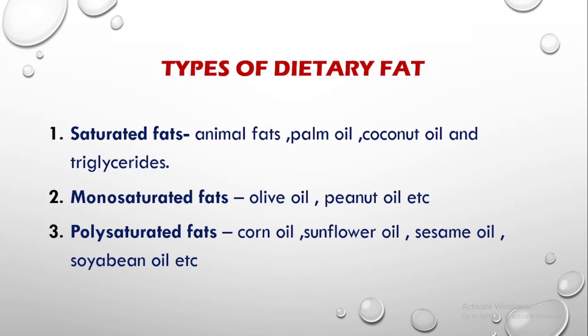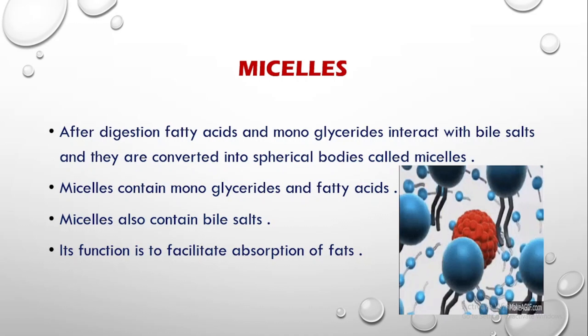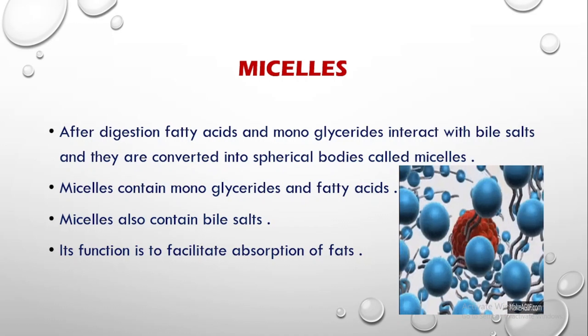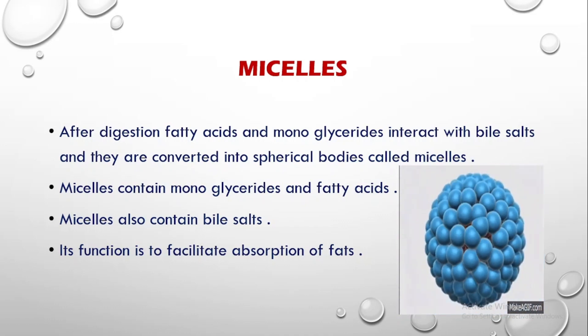The fat taken up by the body can be of many types. The basic types of dietary fats are saturated, monounsaturated, or polyunsaturated fats. Saturated fats include animal fats, palm oil, coconut oil, and triglycerides. Monounsaturated fats include olive oil, peanut oil, etc. Polyunsaturated ones include corn oil, sunflower oil, sesame oil, and soybean oil, etc.